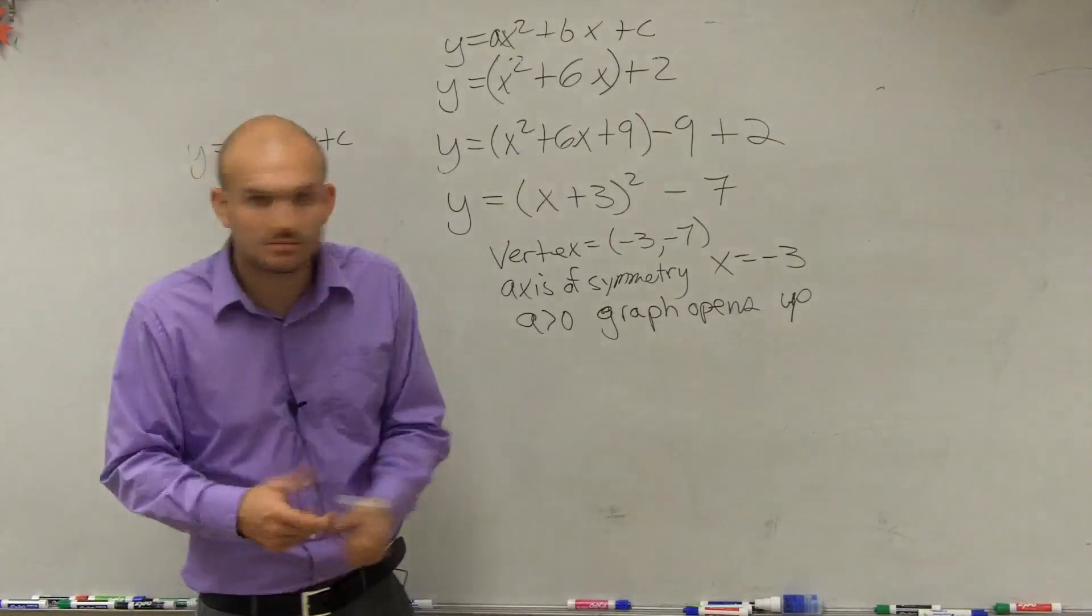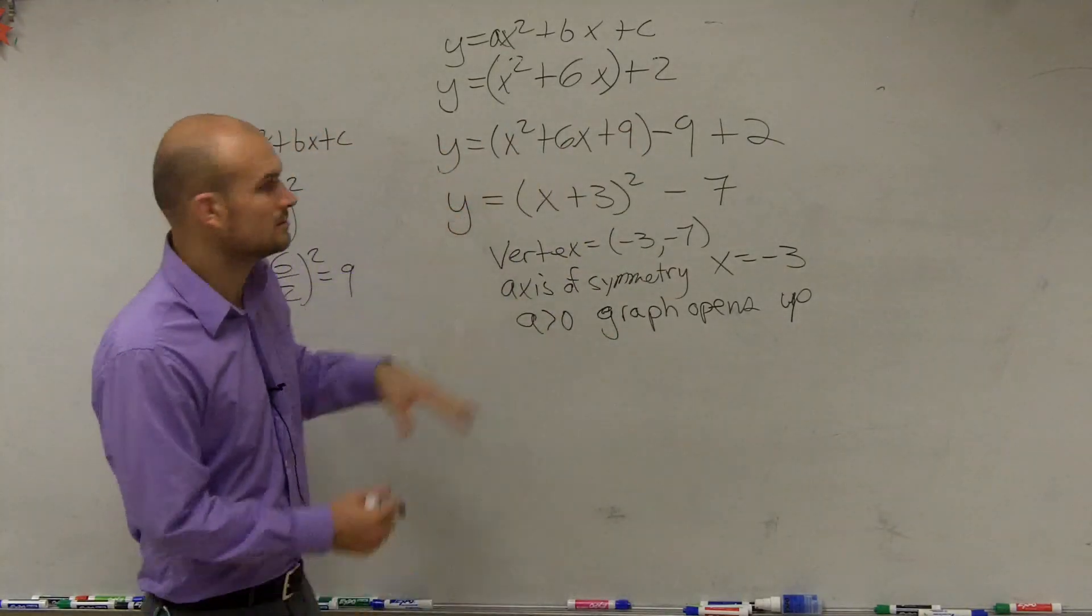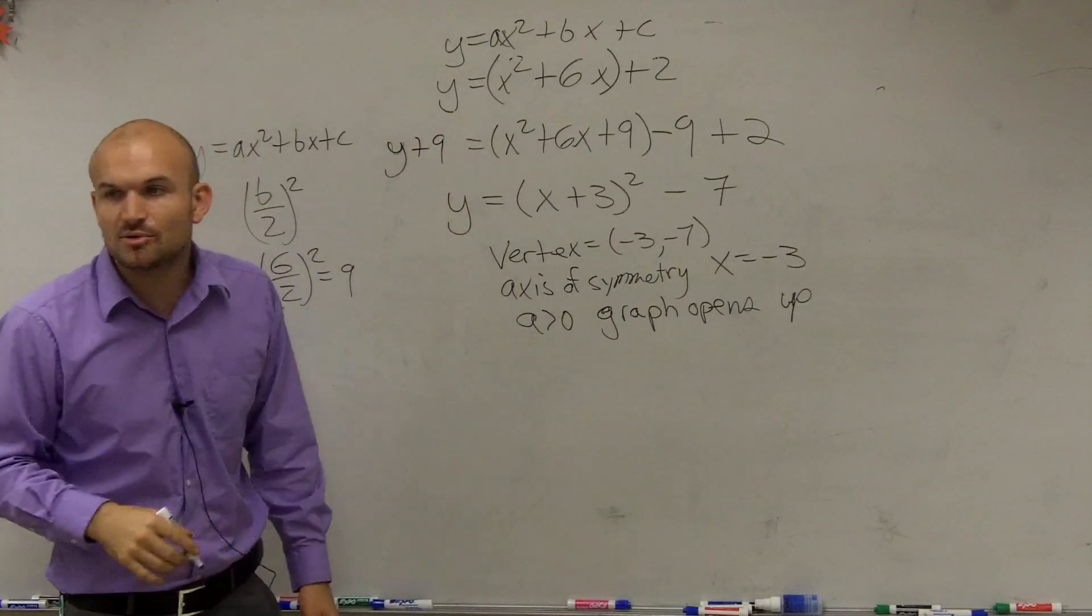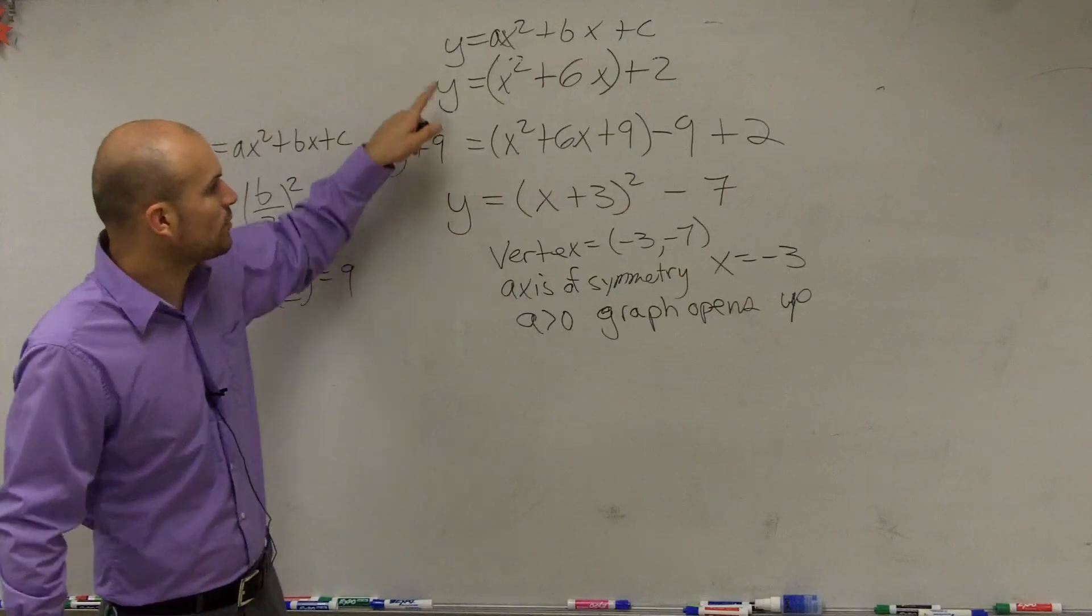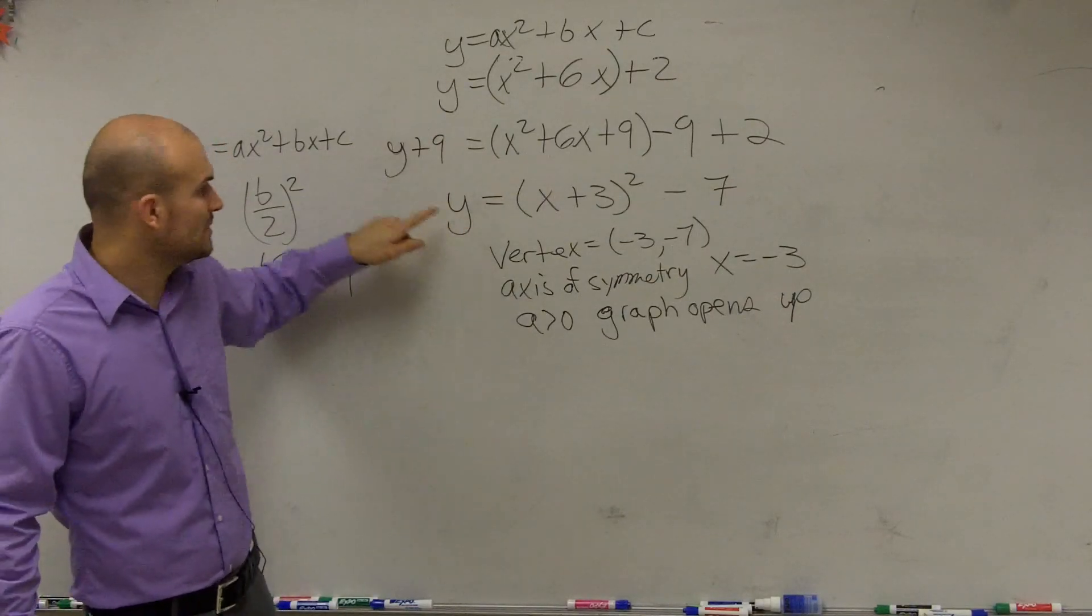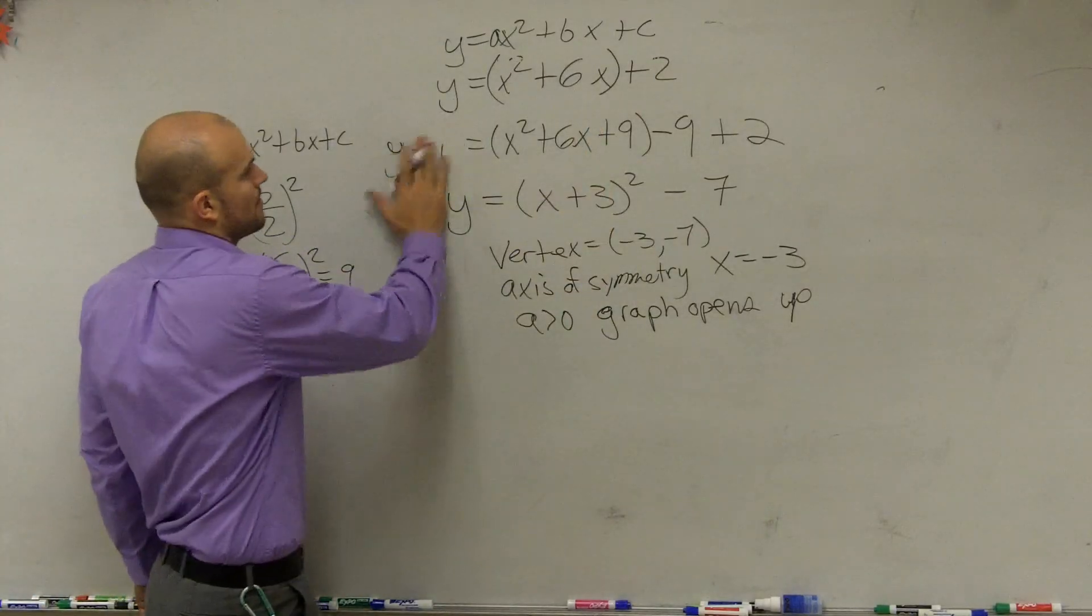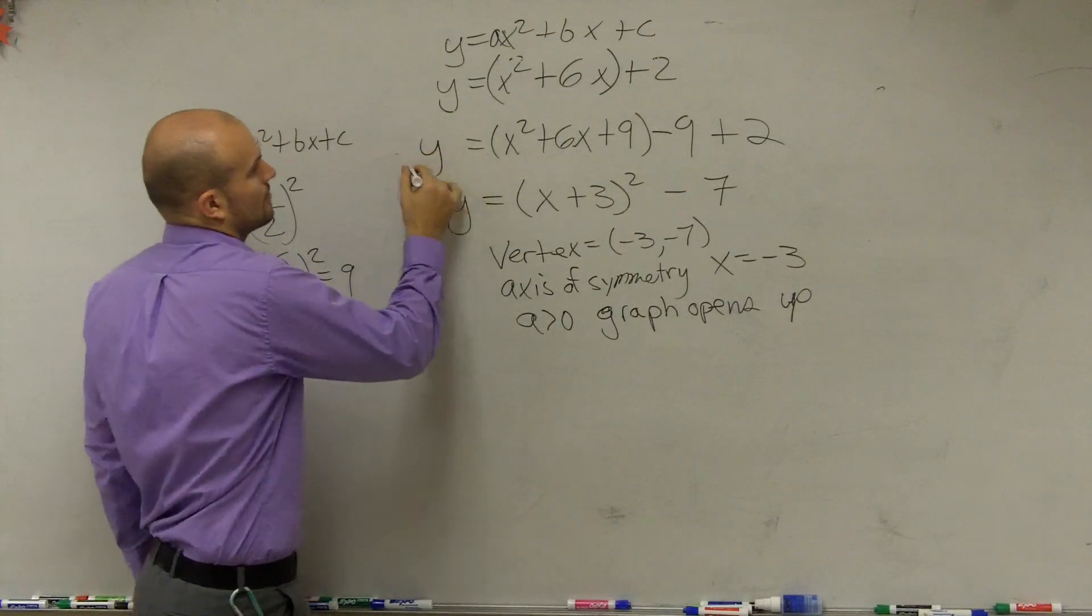But you could add it to the other side. You could. Add it to the other side. Y plus 9, right? Add it to both sides. But remember, we're solving for y. So we've got to get rid of the 9. So then you could just subtract it back over. Make sense? Okay.